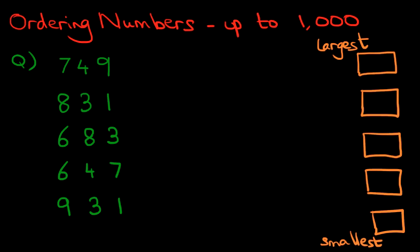Right, let's have a look at our numbers then. And you know the routine by now. We're going to start with the digit on the left. That's the hundreds column. So let's write down how many hundreds there are in each number. Seven hundred and forty-nine has seven hundreds. Eight hundred and thirty-one has eight hundreds. Six hundred and eighty-three has six hundreds. Six hundred and forty-seven has six hundreds. And lastly, nine hundred and thirty-one has got nine hundreds.